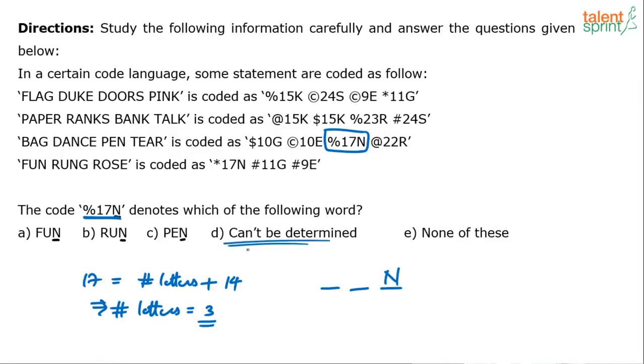But the same code percentage 17N has been used here. So you should figure out, percentage 17N, the 3 letter word that we have here in the respective statement is pen. Ends with N, 3 letters plus 14 is 17. And maybe P is percentage. So answer here is option C.